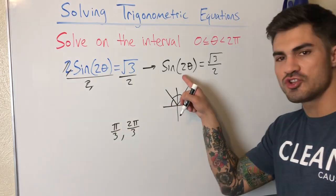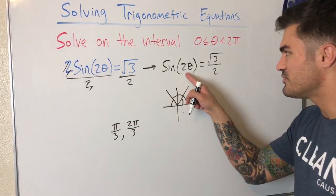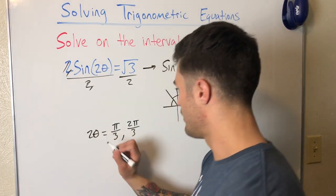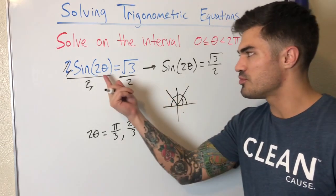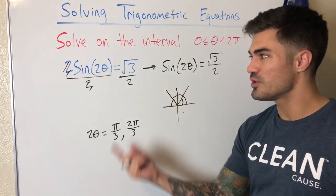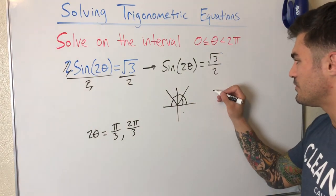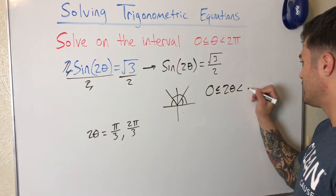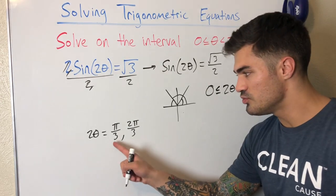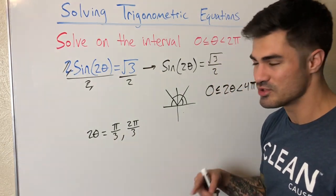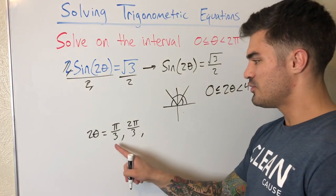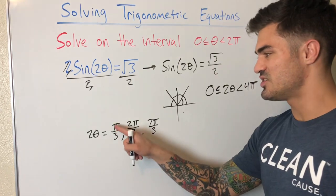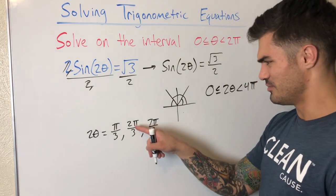These are solutions for 2θ. Since I have 2θ, the interval stretches: multiplying through by 2 gives 0 ≤ 2θ < 4π. I'll find all values of 2θ between 0 and 4π, then divide by 2. Adding 2π to each solution: π/3 + 2π = 7π/3, and 2π/3 + 2π = 8π/3. So I have four values of 2θ: π/3, 2π/3, 7π/3, and 8π/3.